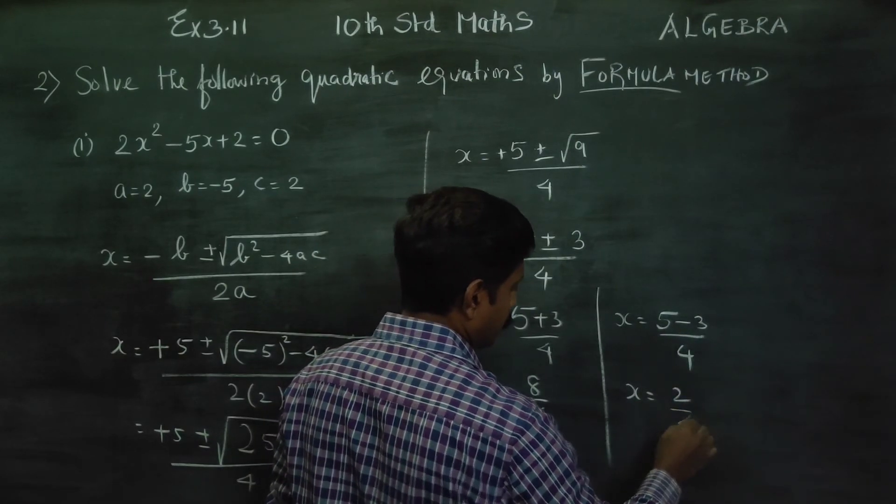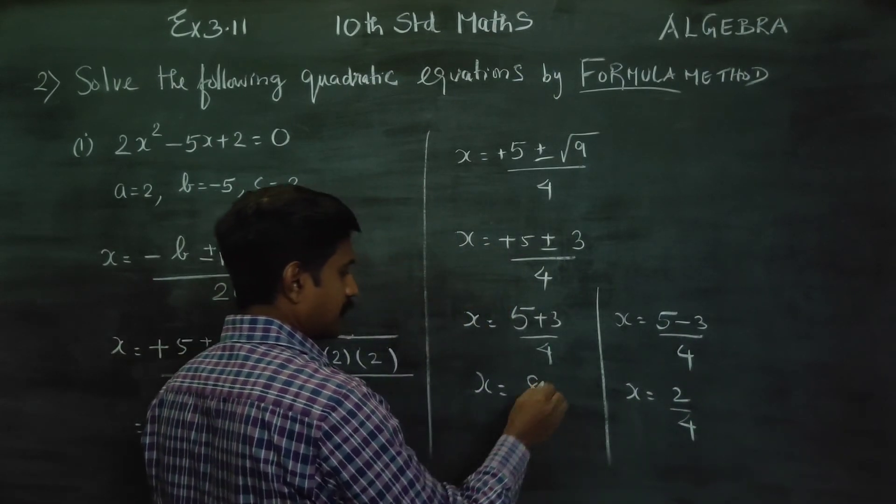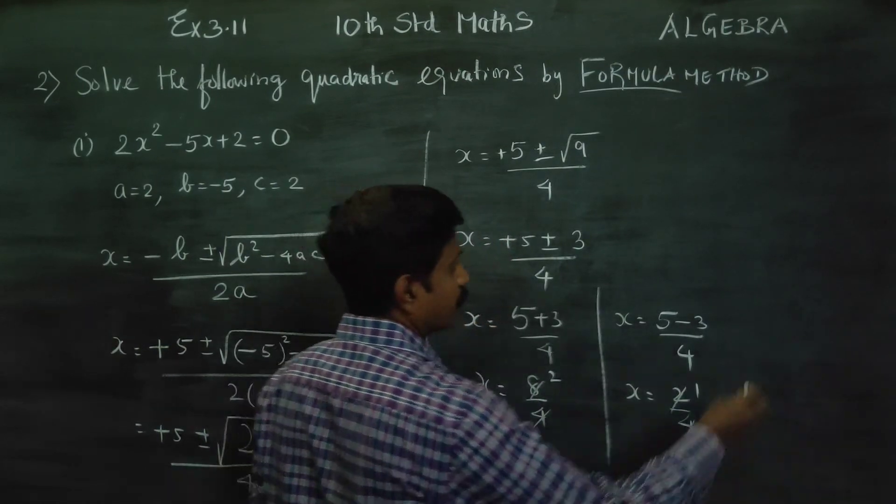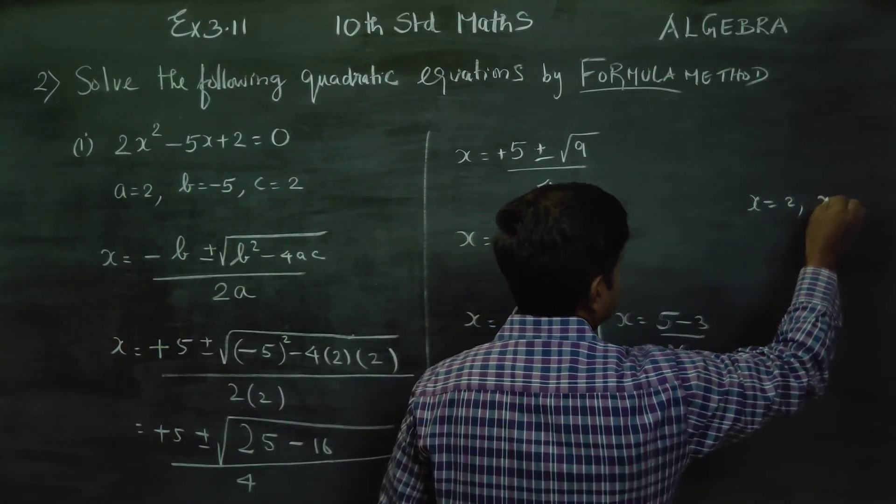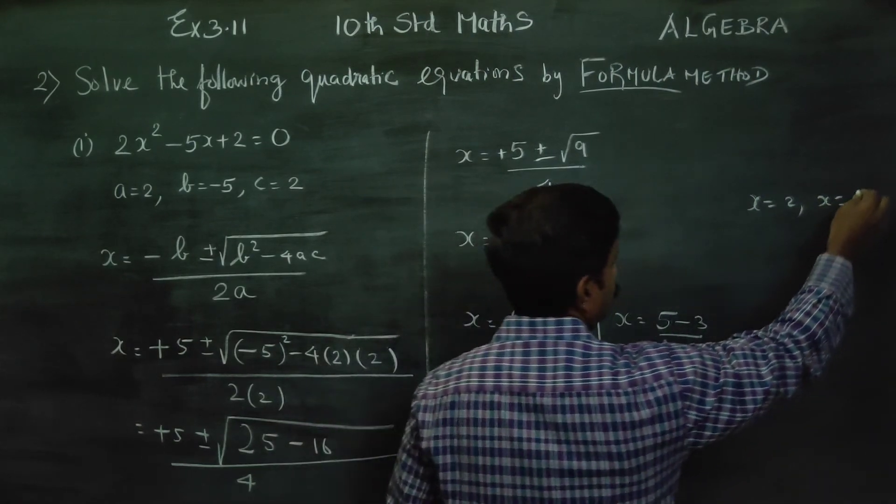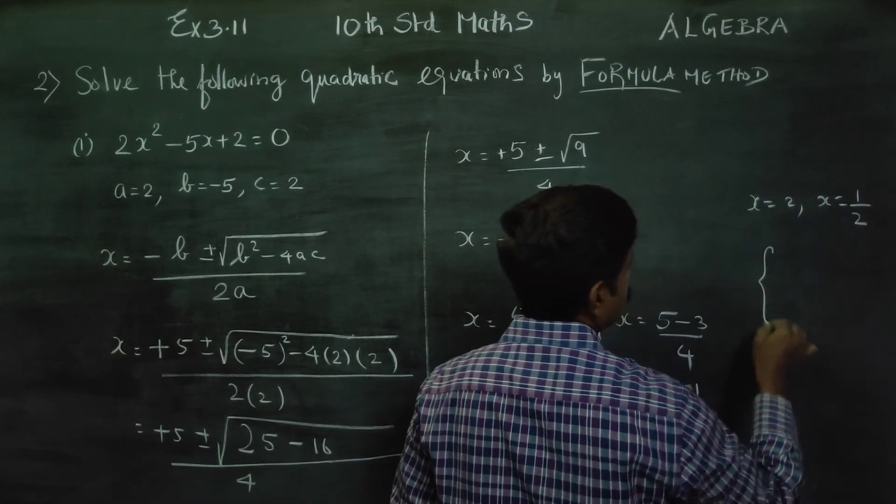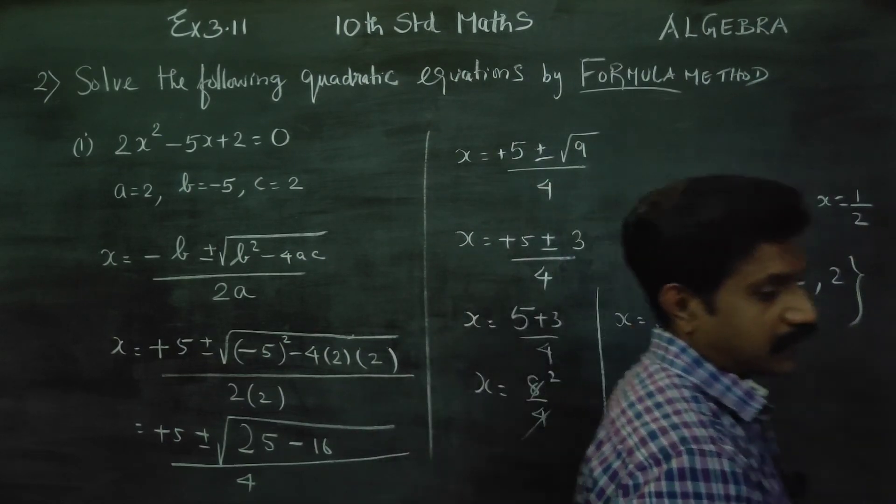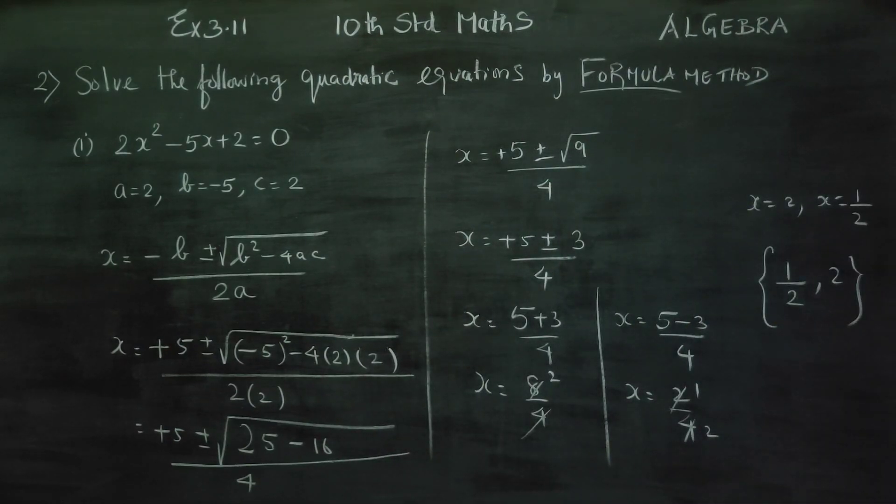x is equal to 8 by 4, canceling gives 2. x is equal to 5 minus 3, that's 2 by 4, canceling gives 1 by 2. Therefore the answer is x is equal to 2 or x is equal to 1 by 2. Therefore your solution set will be 1 by 2 comma 2, or 2 comma 1 by 2. This is your final answer. Thank you.